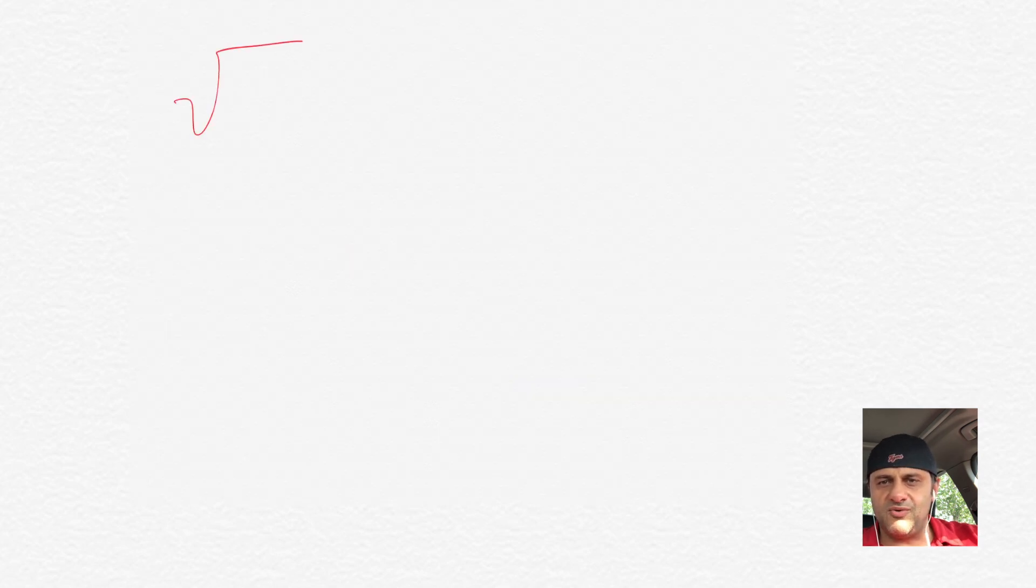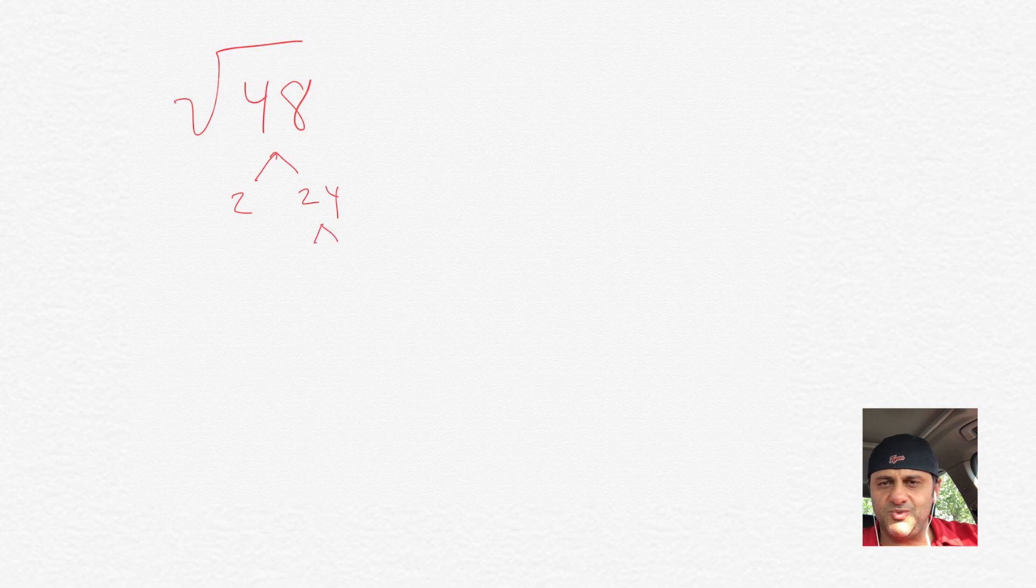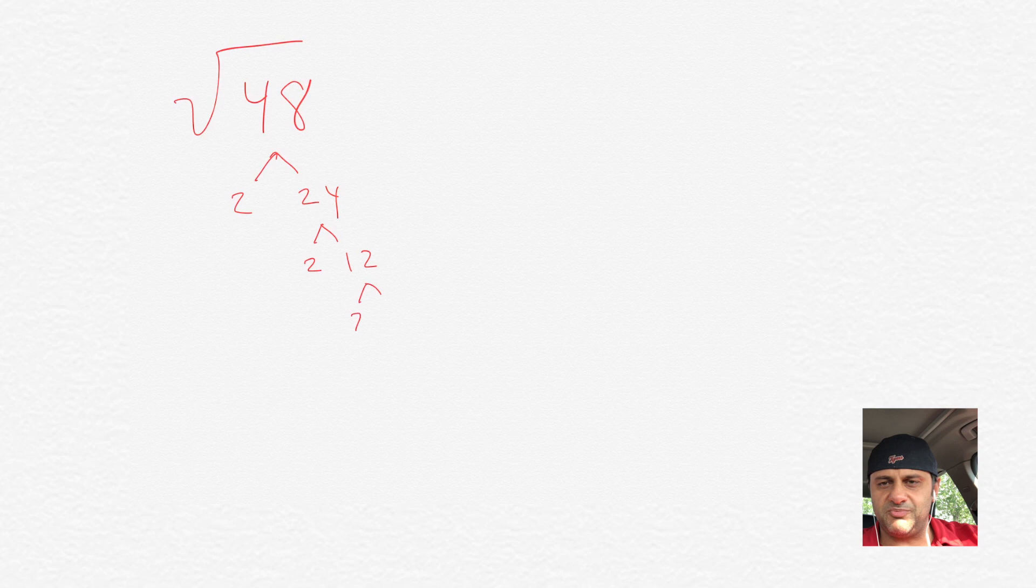Let's do the square root of 48. That one, 2 goes into 48 24 times. 2 goes into 24 12 times. 2 goes into 12 6 times. And then 6 breaks down to 2 times 3. Now we have 4 2s, or 2 pairs of 2s, if you want to say it that way.